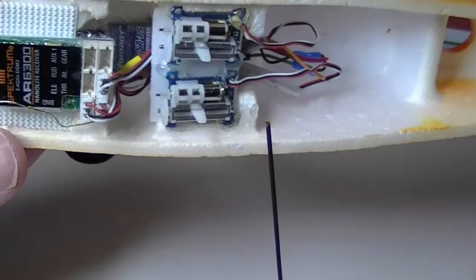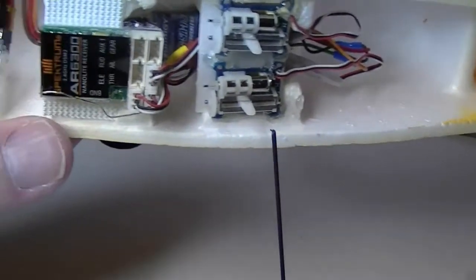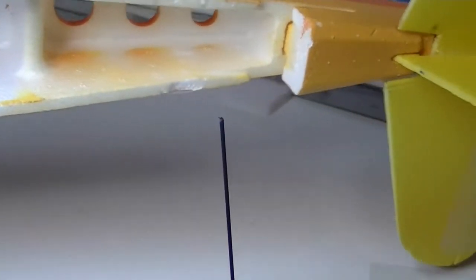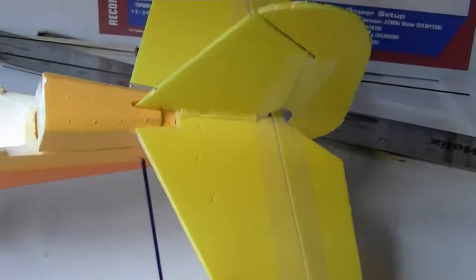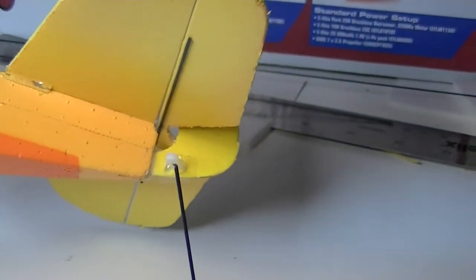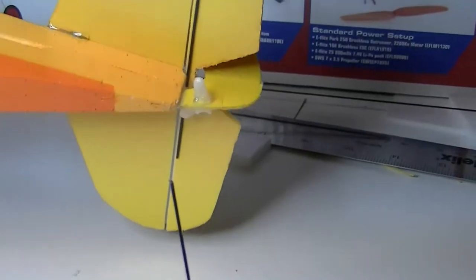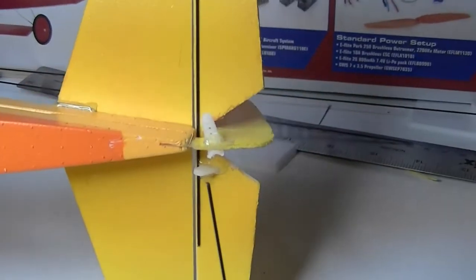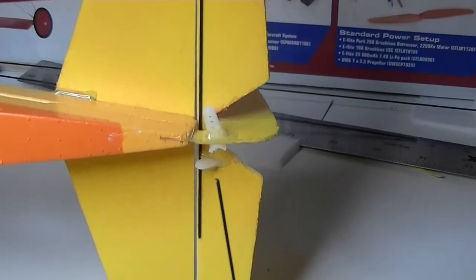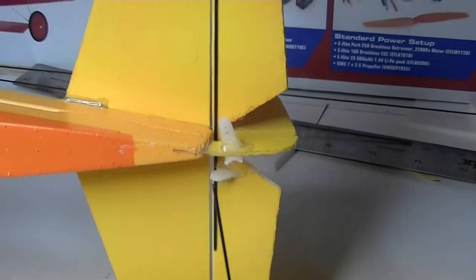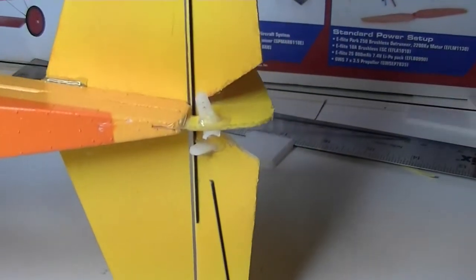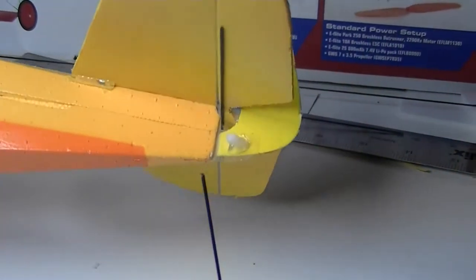Now I need to run my control rods from these servos down through the body to the underside of the tail section. Under there I've got a little servo horn. I cut off the end of a servo horn and just hot melted it onto the rudder. Did the same thing for the elevator, took a servo horn and hot melted it right onto it, poked it through and hot melted it. Now I just need to connect those up.